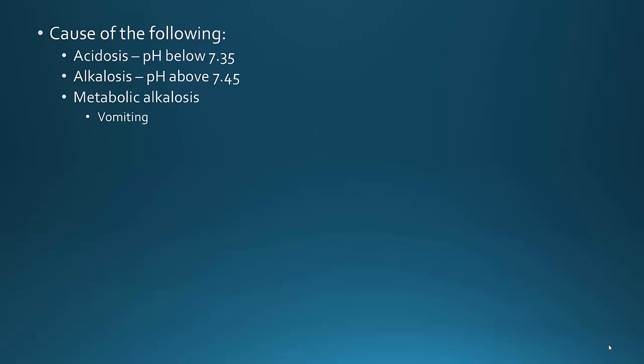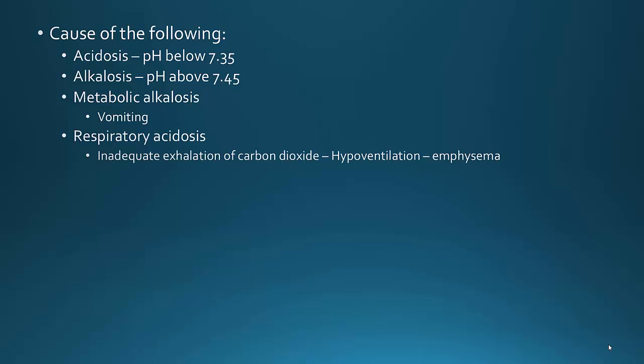Metabolic alkalosis — the most common cause is excessive vomiting. Respiratory acidosis is inadequate exhalation of carbon dioxide, or what we call hypoventilation. This could be caused by things like asthma, but especially emphysema. Respiratory alkalosis is the opposite, caused by hyperventilation — you're ventilating too much.